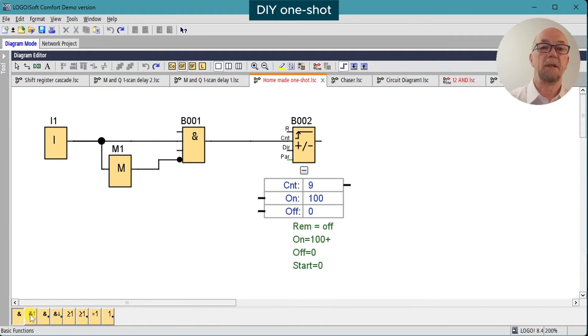This is a bit redundant, as we've seen already. We have the AND edge general function block, which does the same thing. The output just detects a rising edge on the inputs and gives a single scan pulse output.